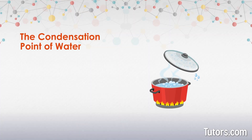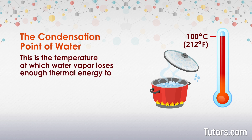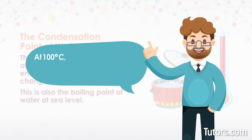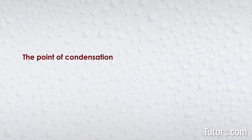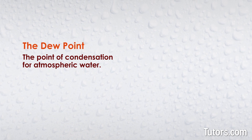The condensation point of water is 100 degrees Celsius or 212 degrees Fahrenheit. This is the temperature at which water vapor loses enough thermal energy to change into liquid form again. This is also the boiling point of water at sea level. At 100 degrees Celsius, fresh water becomes water vapor, the gaseous form of liquid water. The point of condensation for atmospheric water is also referred to as the dew point.